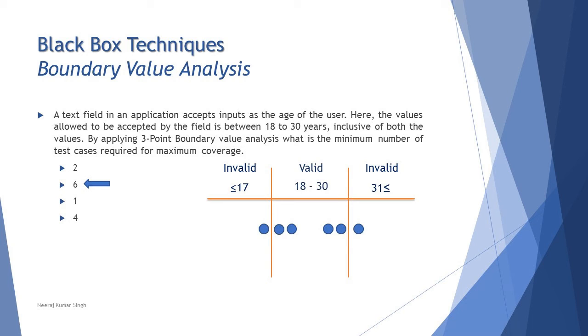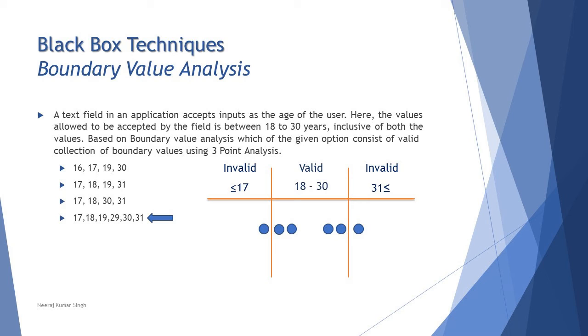Let's take another example. What if they ask you for the boundary values? You must have already understood what type of typical examples are there with boundary value analysis. The same example which we used earlier, but here this time we are asking which one of the options consists of the boundary values itself. You take one outside, two inside, and that's where you get 17, 18, 19, 29, 30, 31.